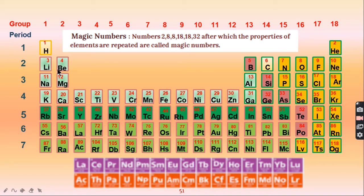We can verify this with group 2 as well. Beryllium — adding 8 gives magnesium, adding 8 gives calcium, adding 18 gives strontium — all with similar properties. So magic numbers not only show similar chemical properties but also help calculate the atomic number of any element accurately if we know the first element in a group.